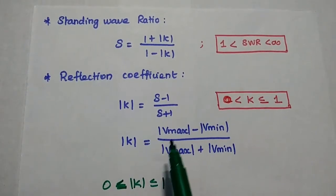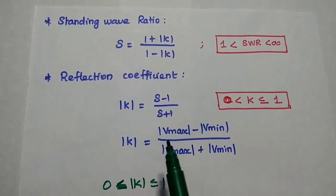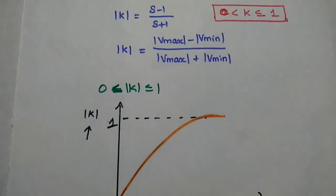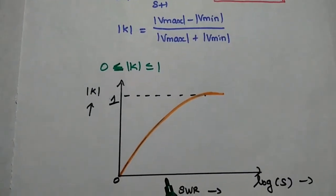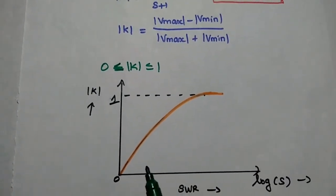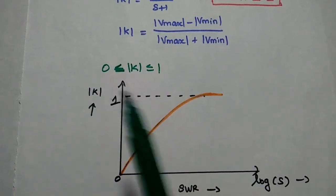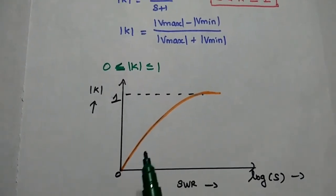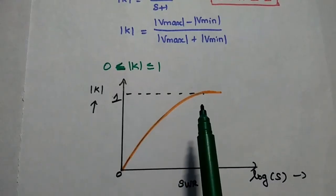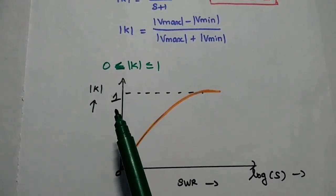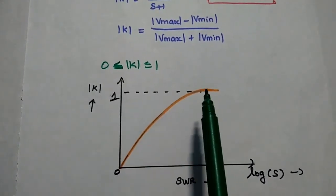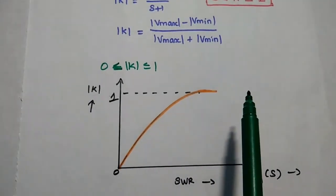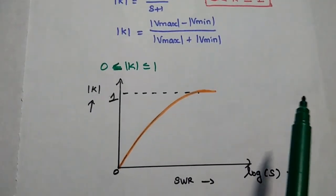We are going to solve problems using these formulas in the next video lecture. Finally, the diagrammatic representation of the relation between reflection coefficient and standing wave ratio shows that if the standing wave ratio increases, the reflection coefficient also increases up to the value 1, and then it maintains the value of 1.